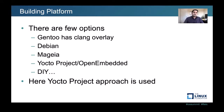Moving on to building the platform, there are several infrastructure options available. Gentoo has a Clang overlay, also used by Chrome OS. Debian is building Clang-based packages and archives. Mageia is another, actually ahead of all others, using Clang as its default system compiler for its targets. You could also use the Yocto project, which is what I'll use throughout this presentation. Clang is inherently a cross compiler, so creating a cross-compiler toolchain with Clang is straightforward.